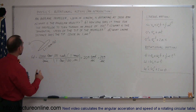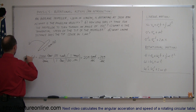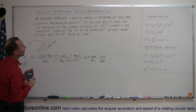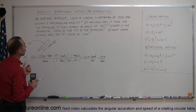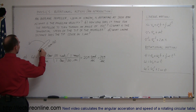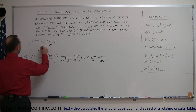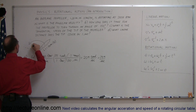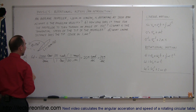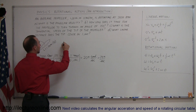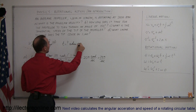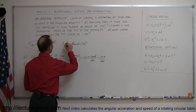Going on to Part B: they want us to find how long it takes for the propeller to turn through an angle of 150 degrees. Let's say it starts at a certain location and travels through an angle of 150 degrees, so theta equals 150 degrees. We want to know the time — time equals question mark when theta equals 150 degrees.